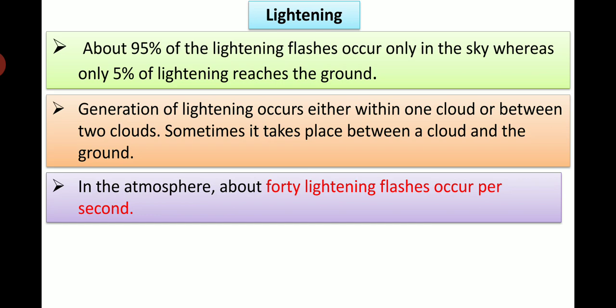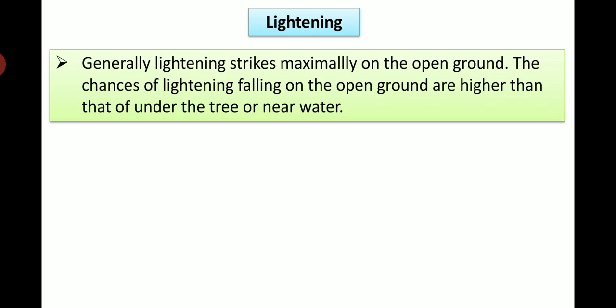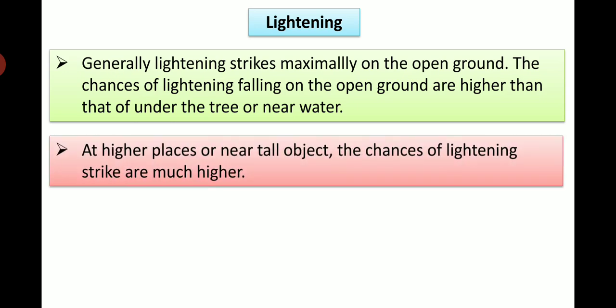In the atmosphere about 40 lightning flashes occur per second. There is very high temperature due to lightning. This causes sudden expansion of the air under high pressure which results into cloud thundering. Generally lightning strikes maximally on the open ground. The chances of lightning falling on the open ground are higher than that of under the tree or near water. At higher places or near tall objects the chances of lightning strikes are much higher.